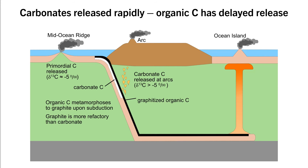After subducting past sub-arc depths, the slab will have lost most of its carbonate and will now be relatively enriched in graphite organic carbon. These deeply subducted slabs may then become entrained in upwelling mantle plumes and contribute to ocean island volcanism, releasing the subducted organic carbon. This will result in a spike of CO2 emissions with delta-13C less than minus 5 per mil, which will decrease the delta-13C of global CO2 emissions and will terminate the positive carbon isotope excursion and possibly even drive a negative carbon isotope excursion.